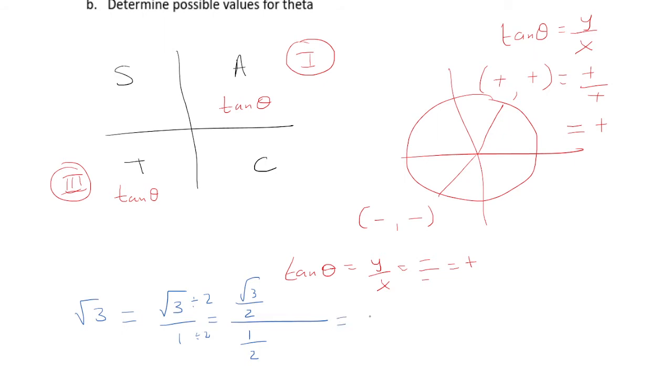Think of this as the top part is sine of theta, and the bottom part is cosine theta. We can have two cases, whether both positive, being quadrant 1, or both negative, being quadrant 3.